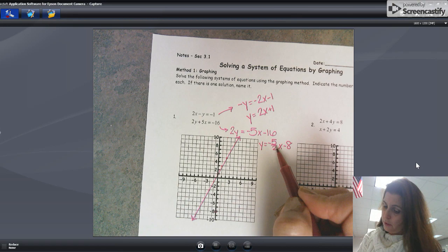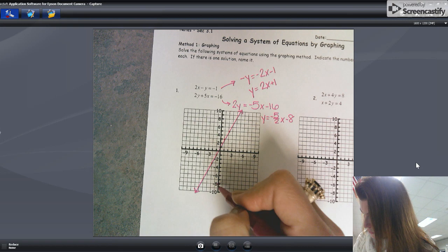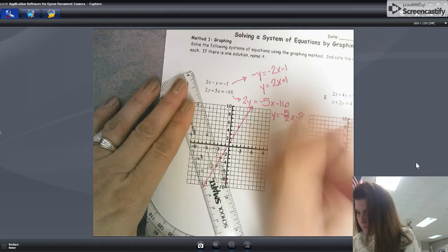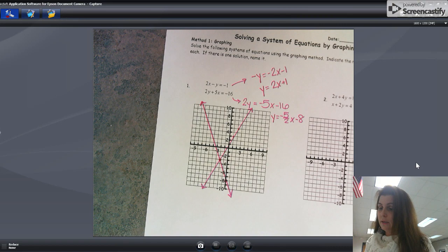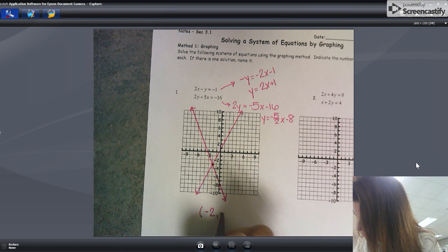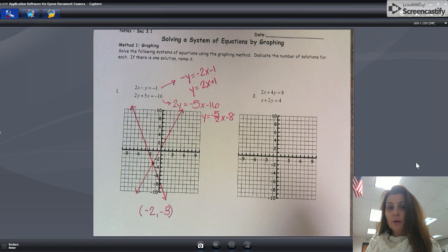Okay, so y-intercept of negative 8. I have a slope of negative 5 over 2. Well, I can't go down 5, but I can go up 5 and back 2. So 1, 2, 3, 4, 5, back 2. Okay, there I am. There are my two lines graphed and now I can clearly see their intersection point is my solution to the system. That solution is negative 2, negative 3. Number two is for you to try.